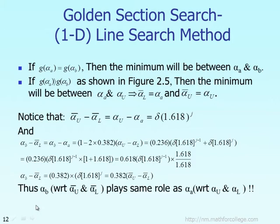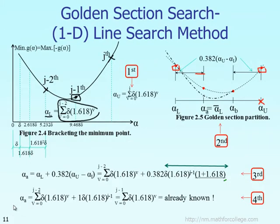You calculate alpha A — you already know it. So you only have to calculate the new point alpha B right here. You don't have to calculate alpha A again.